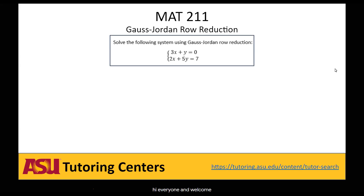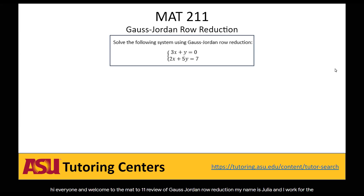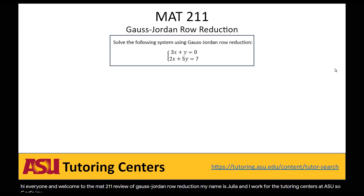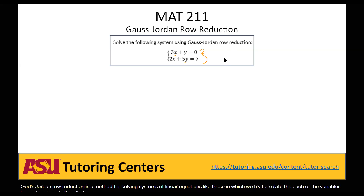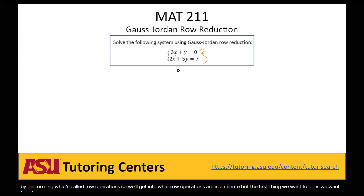Hi everyone and welcome to the MAT 211 review of Gauss-Jordan row reduction. My name is Julia and I work for the tutoring centers at ASU. Gauss-Jordan row reduction is a method for solving systems of linear equations in which we try to isolate each of the variables by performing what's called row operations. The first thing we want to do is set up our system of equations as an augmented matrix.